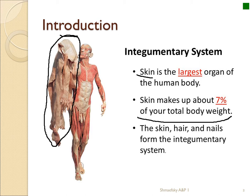The skin itself makes up about 7% of your approximate body weight. It's also associated with other components — hair, nails, and glands we'll see as we go on. So the Integumentary System is an organ system, with the skin itself being one organ.